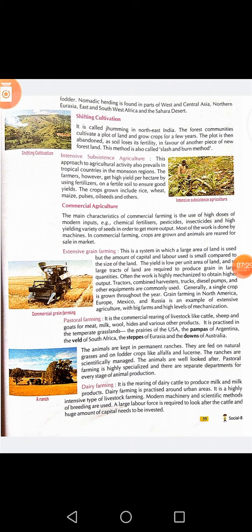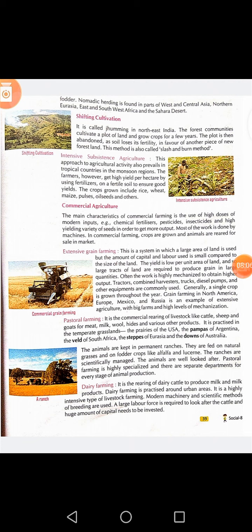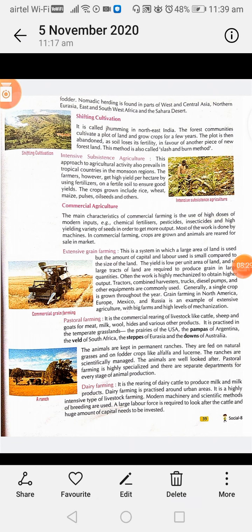Pastoral farming is the commercial rearing of livestock like cattle, sheep and goats for meat, wool, hides and various other products. It is practiced in temperate grasslands like the prairies of the USA, the Pampas of Argentina, the veld of South Africa, the steppes of Eurasia and the downs of Australia. The animals are kept in permanent ranches, fed on natural grasses and fodder crops like alfalfa and lucerne. The ranches are scientifically managed and pastoral farming is highly specialized, with separate departments for every stage of animal production.